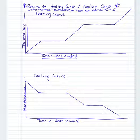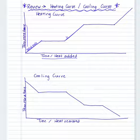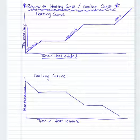We have three slanted lines. The first slanted line is where we have only the solid present. The solid is heating up, increasing in temperature — it has an upward slope. The second slanted line is the liquid only section; again, the temperature is increasing. The third slanted line is where we have gas only, and again, the temperature is increasing.